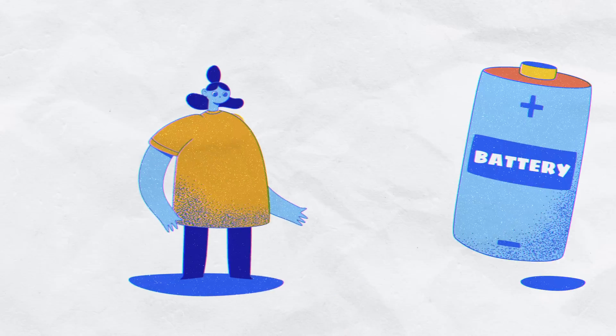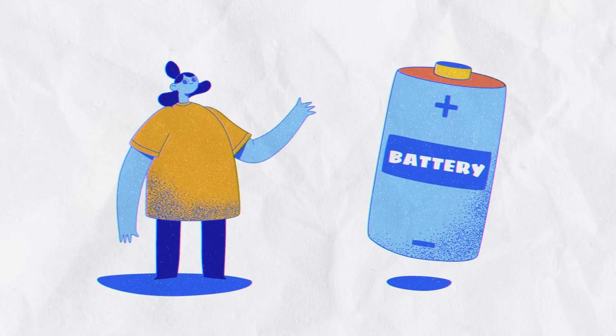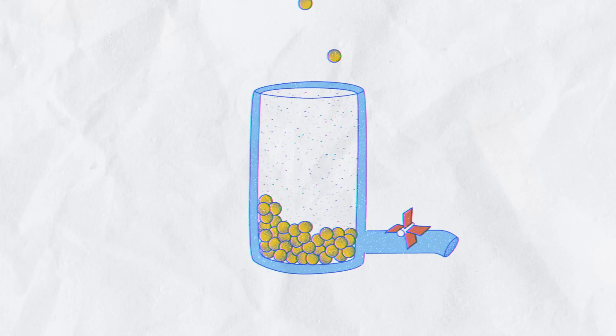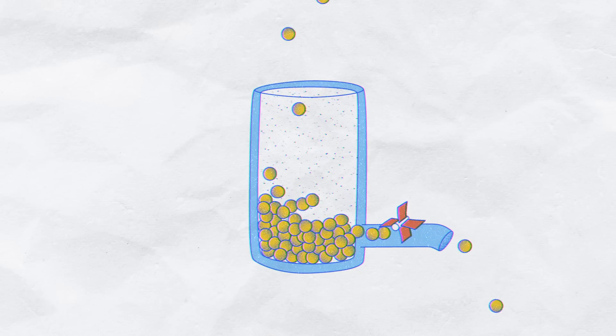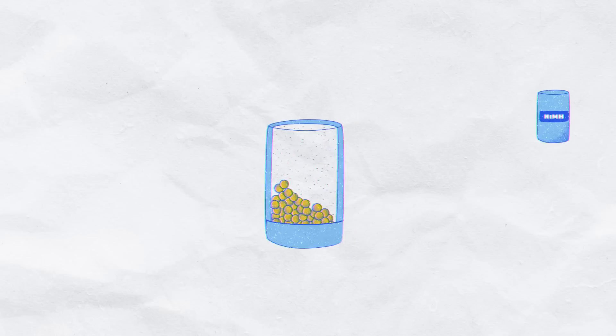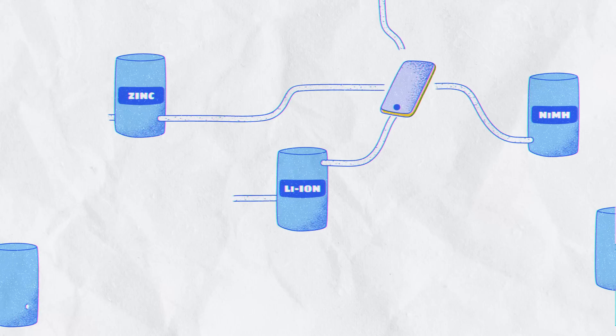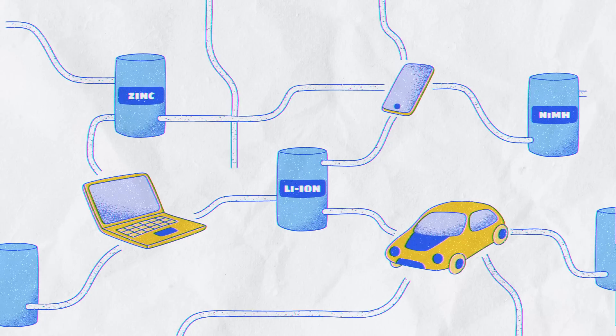To answer that question, it helps to define a battery. It's simply something that stores energy and releases it on demand. The lithium-ion batteries that power our phones, laptops, and cars are just one type.